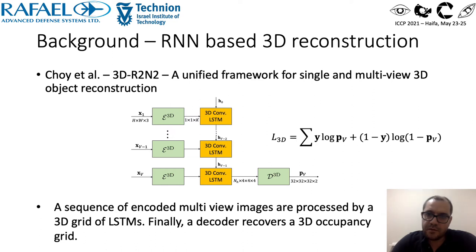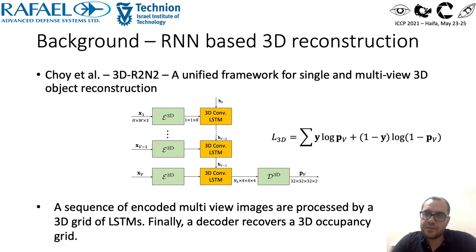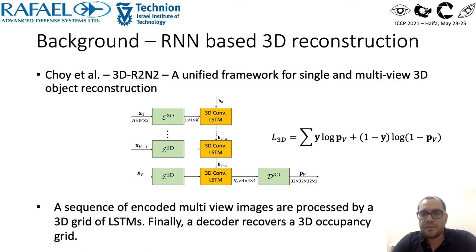We build on a previous work which proposed an RNN for 3D reconstruction. The images are encoded by a CNN, then a 3D grid of special LSTM elements is applied. Each such element reconstructs a part of the 3D space. Finally, a decoder produces a 3D occupancy map. The loss function is a voxel-wise cross-entropy loss.